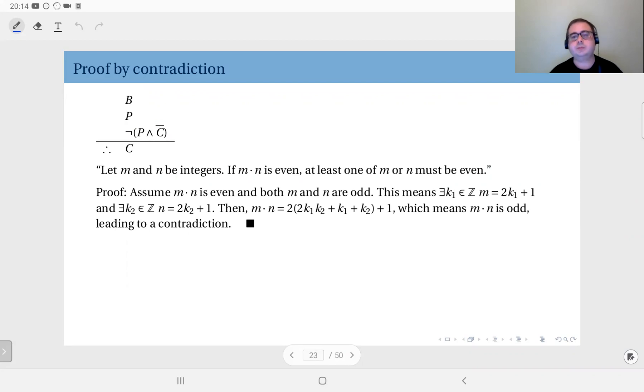Simple statement. Let's prove this using contradiction. Assume m times n is even. This is given already. And both m and n are odd. Now you see this is the negation